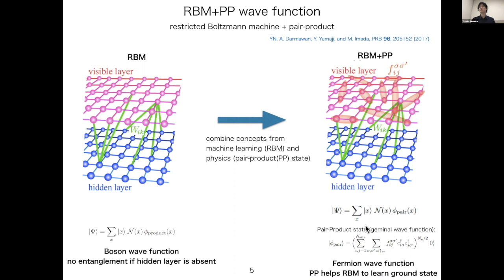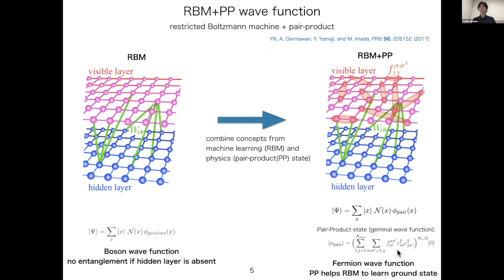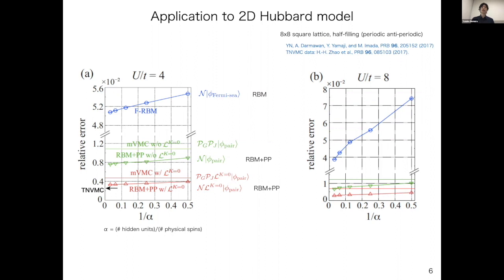Here we take the pair product state, called geminal in chemistry. It is basically the pairing interaction and is already a very powerful ansatz. We have a variational parameter F_ij, and by optimizing this F_ij, the pair product state can help the RBM to efficiently represent the ground state. This combination is a happy marriage between machine learning and physics — by combining these two methods, the accuracy drastically improves.